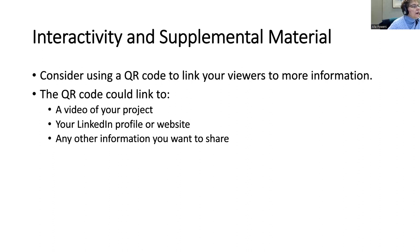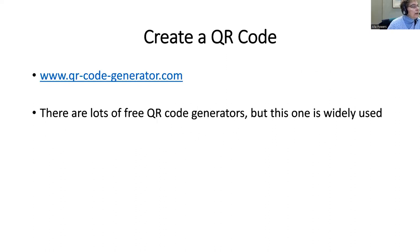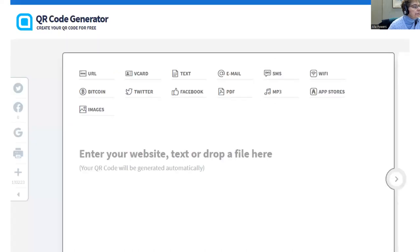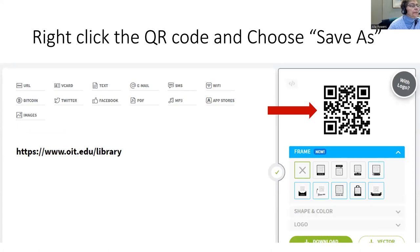You would want your poster to be interactive for your viewers. If you have supplemental material that you and your team worked hard on — like a video of the different steps of your project, your LinkedIn profile, or a website — that would be a great way to connect your viewers. Using a QR code is the way to do this. Here is one of the free websites to create a QR code — you simply drop a file to create it, choose 'Save As,' and very quickly you get your own QR code.